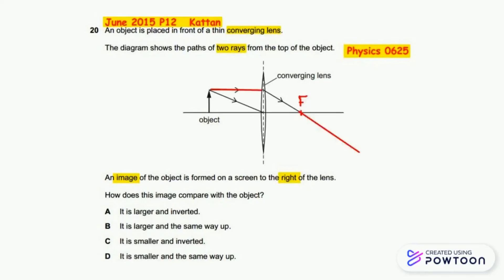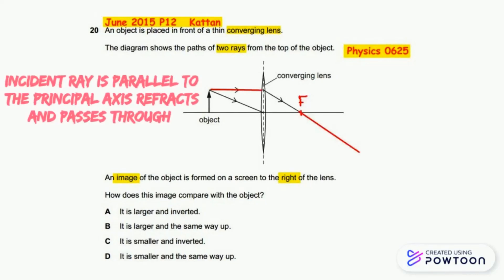The incoming light ray from the top of the object is parallel to the principal axis. Once it meets the converging lens at the incident point, it refracts and passes through the principal focus.